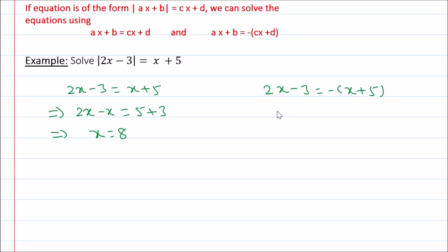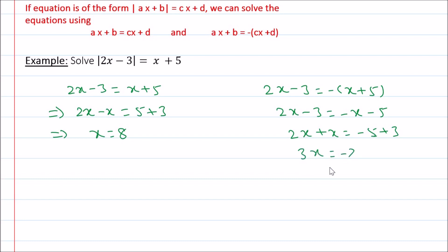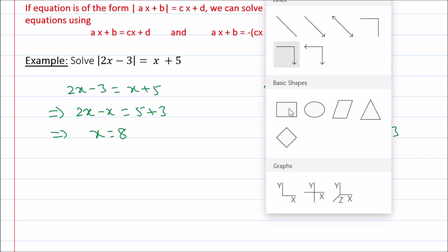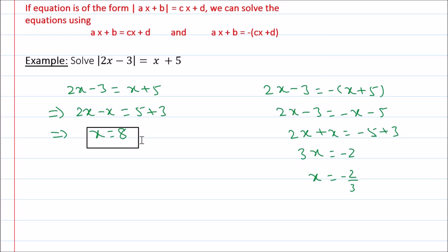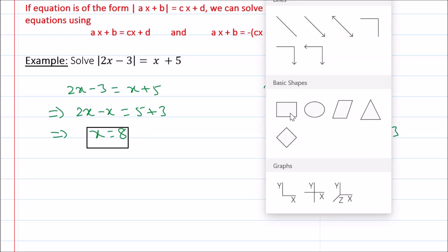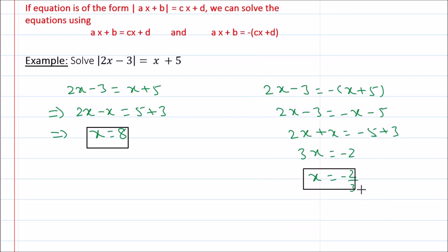For the second equation: 2x minus 3 equals minus x minus 5, so 2x plus x equals minus 5 plus 3, giving 3x equals minus 2, so x equals minus 2 over 3. We have solved this. You can also verify these solutions as shown in the previous example.